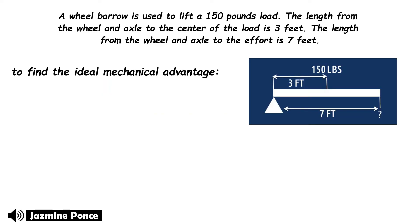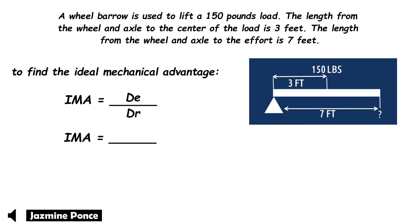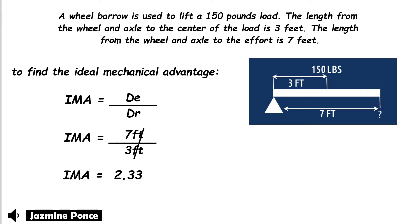We already know how to get the ideal mechanical advantage: divide the distance of effort (input side) by the distance of resistance (output side). We have 7 feet divided by 3 feet, which equals 2.33. So the ideal mechanical advantage is 2.33.